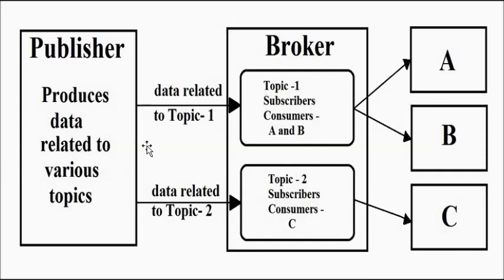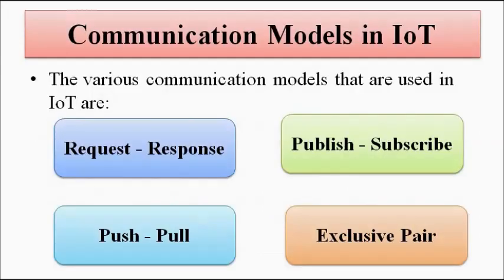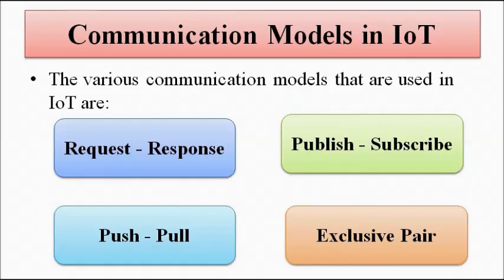This is the publisher-subscriber model of data communication, which is used in IoT network systems and is followed by many social media platforms. We have discussed the request-response model and the publish-subscriber model. We will discuss push-pull and exclusive pair in a separate video. I hope you like this video — please subscribe to my channel Engineering Tutorial for more videos related to electrical, electronics, instrumentation and communication engineering. Have a great day. Thank you very much.